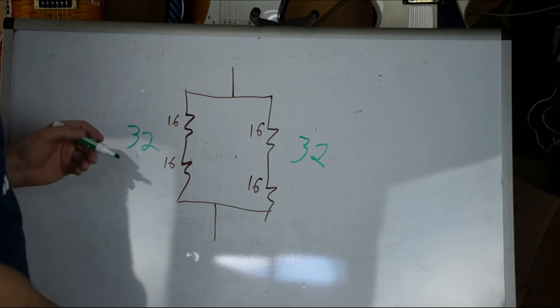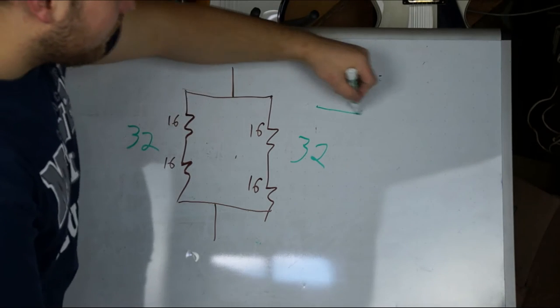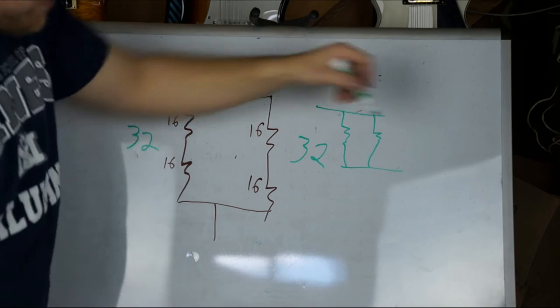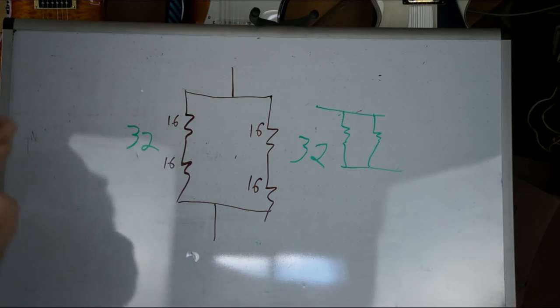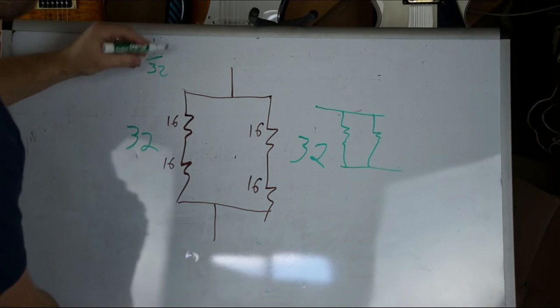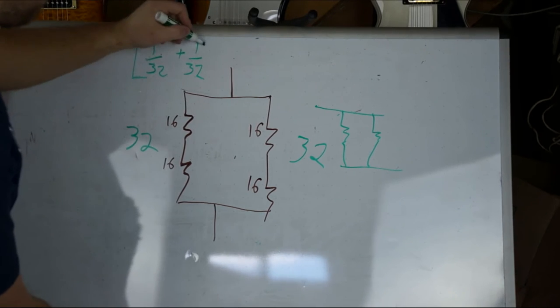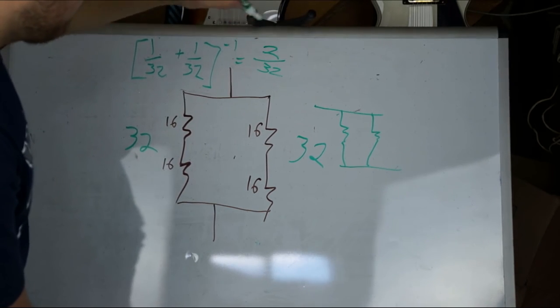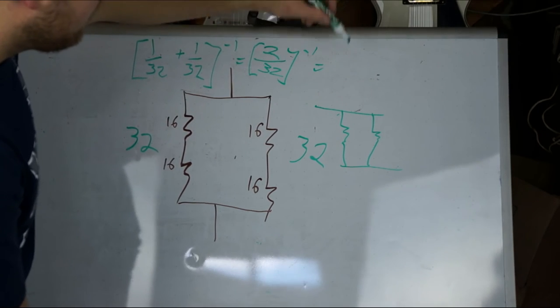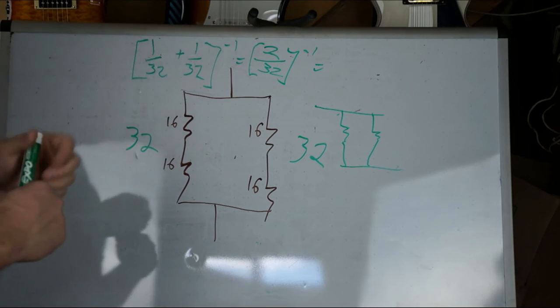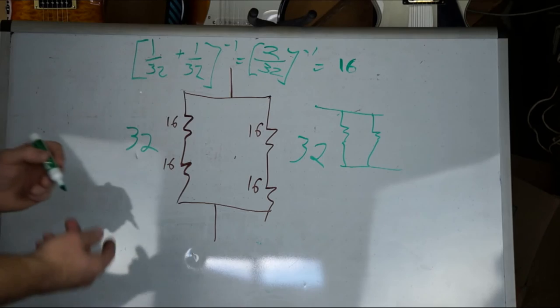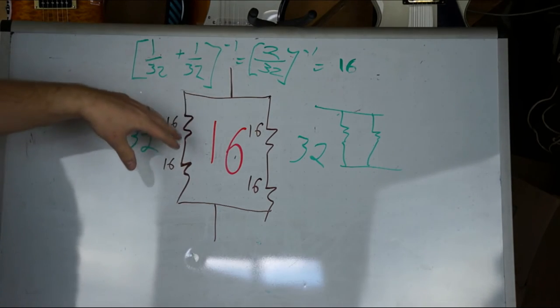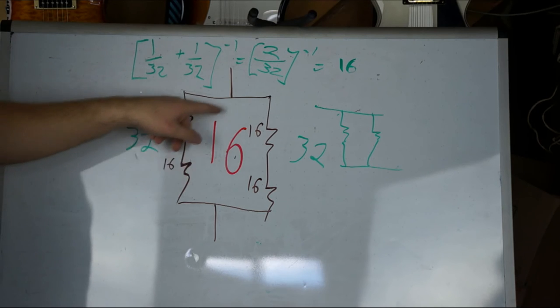So now, basically what we've got is this, right? Where both of those are 32. So now if we're doing the parallel calculation, we've got one over 32 plus one over 32 to the negative one, which equals two over 32 to the negative one. So you just flip flop these, right? 32 over 2 is 16. So then your overall impedance is 16. So if you want to figure out what you should be plugging into your amplifier, you would have your output at 16 ohms.